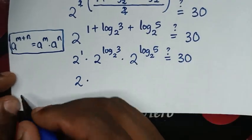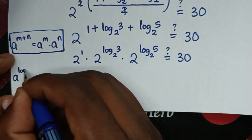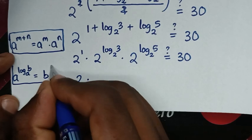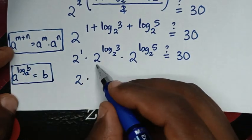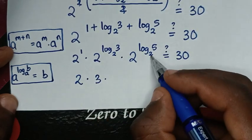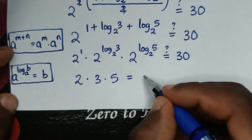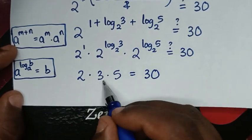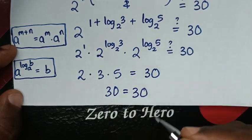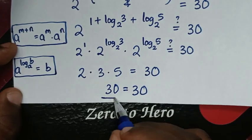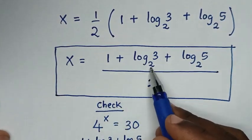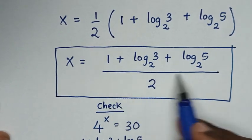Using the rule a to the power of log(b) base a equals b: 2 to the power of log₂3 is 3, and 2 to the power of log₂5 is 5. So we have 2 times 3 times 5. That is 6 times 5, which equals 30. Left side and right side are equal, so it is true. The value of x is (1 + log₂3 + log₂5)/2.